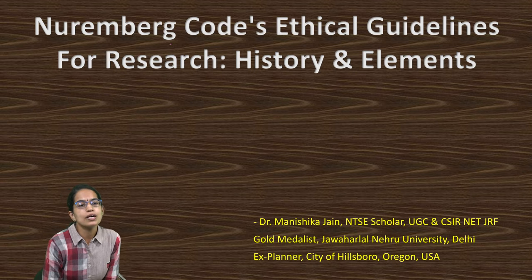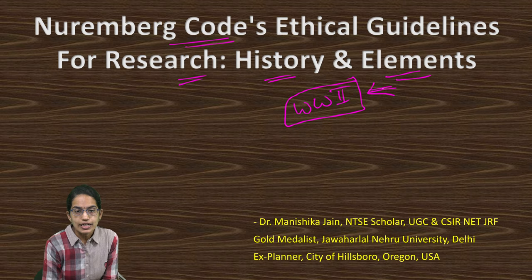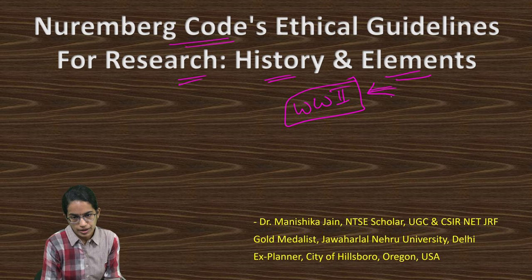What is the Nuremberg Code of Ethical Guidelines for Research? We will focus on the history of this code and the elements associated with it. It was all around World War II where human beings were used as subjects for medical trials, raising questions about the dehumanizing impact on humanity and the injury to human life without their voluntary consent. This was one of the major reasons the Nuremberg Code came into existence.